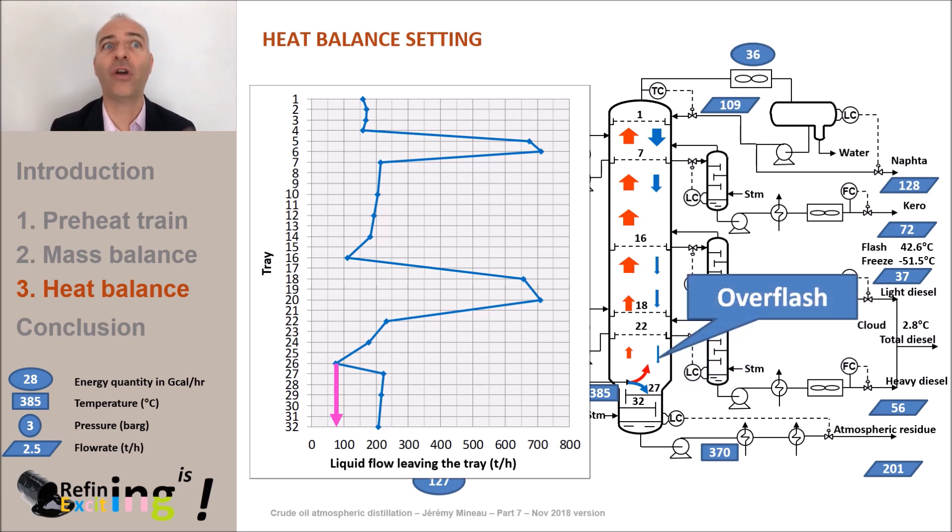The lower the overflash rate, the less vaporized liquid out of the furnace, the more fuel is saved in the furnace. Just like the pump around, we need to have a minimum overflash flow rate to ensure a certain fractionation efficiency between the heavy diesel and the atmospheric residue zone.